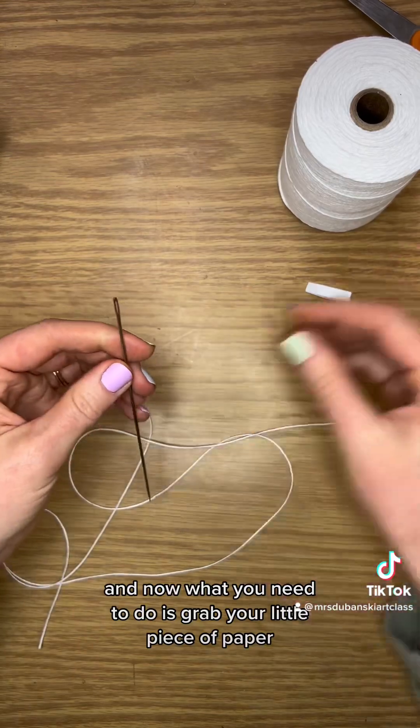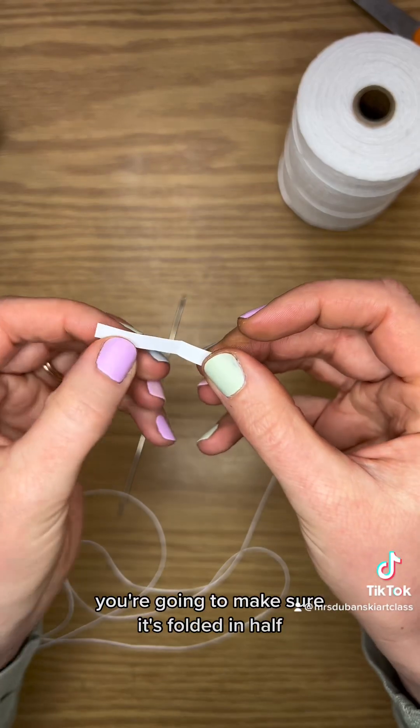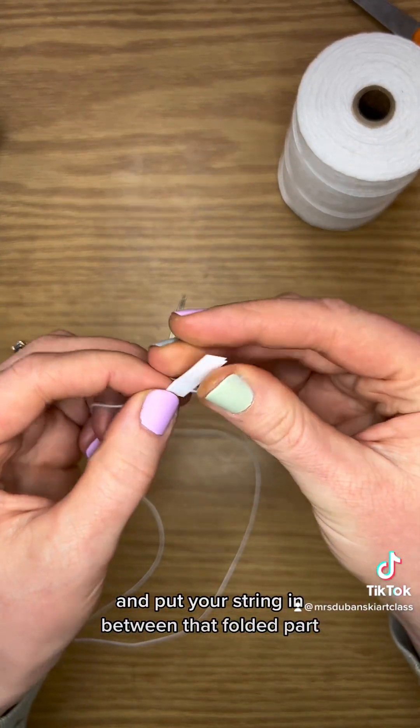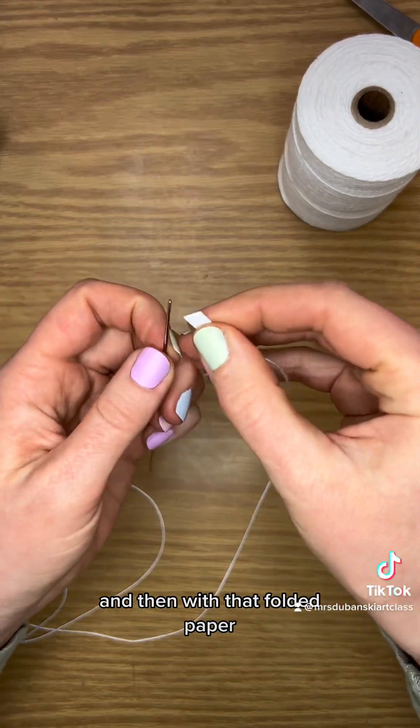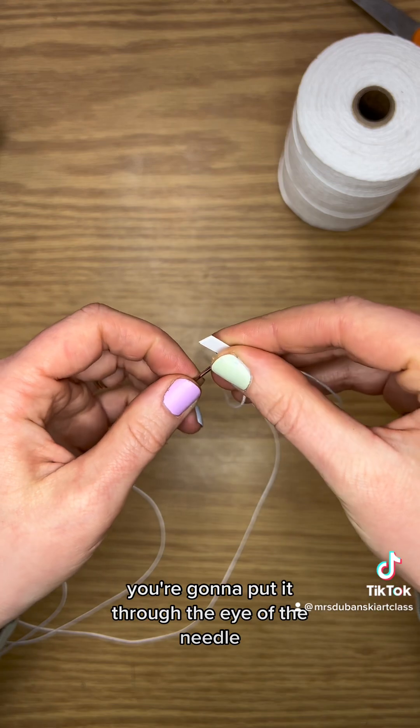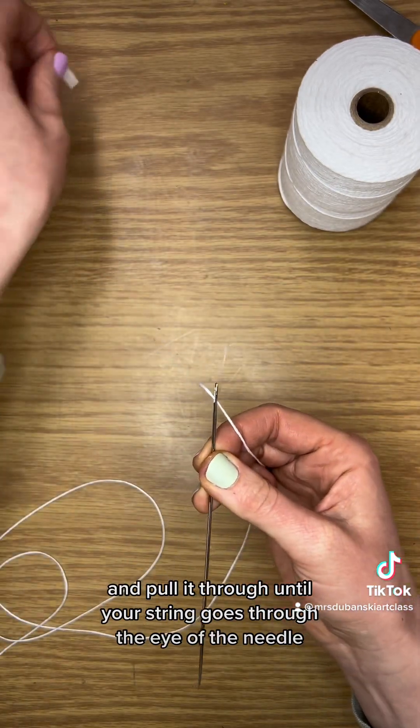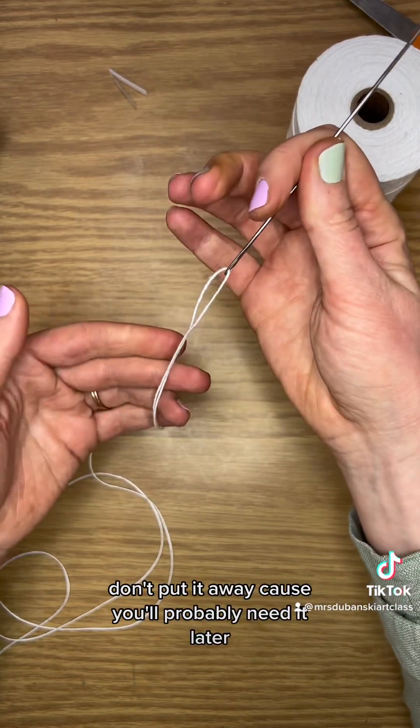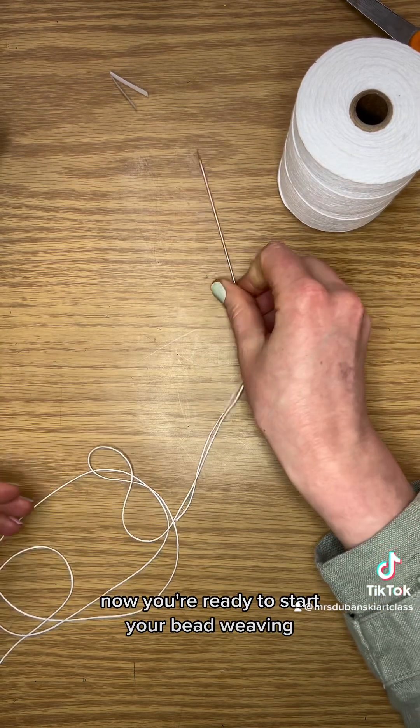Now what you need to do is grab your little piece of paper. You're going to make sure it's folded in half and put your string in between that folded part. And then with that folded paper you're gonna put it through the eye of the needle and pull it through until your string goes through the eye of the needle. Then you can set that piece of paper aside. Don't put it away because you'll probably need it later. Now you're ready to start your bead weaving.